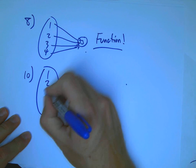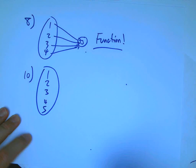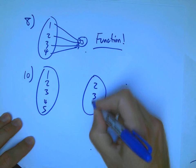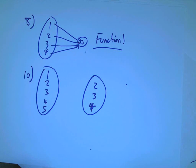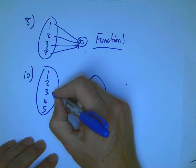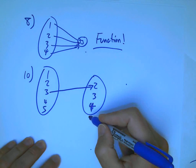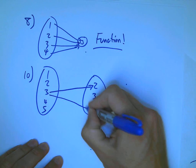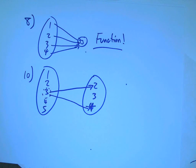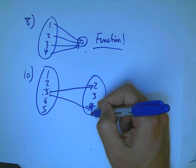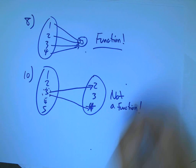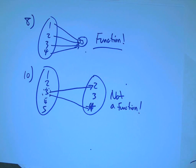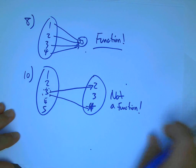As long as each input doesn't go to multiple outputs. On the other hand, this one, number 10. That's a 4, sorry. Here, 1 and, oh, it's 3. It's the key one. I won't draw the whole thing to save a little time. But, the key thing you want to look at in that example is that 3 is a bad input if you want this to be a function. It has two associated outputs, not a function.